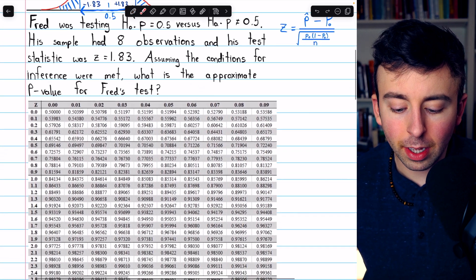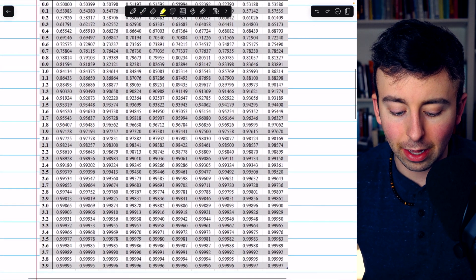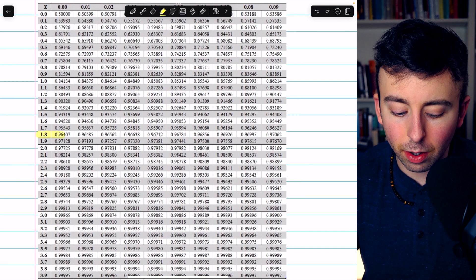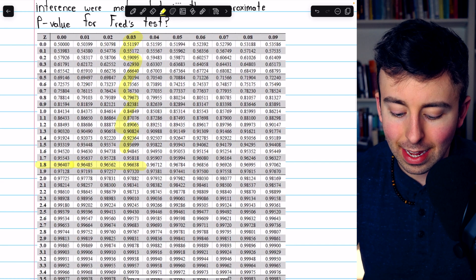So I'm going to look at my table and look for positive 1.83, because all I have in this table are positive values. Here's 1.8, 1.80, 1.81, 2, and 3. That's right here.